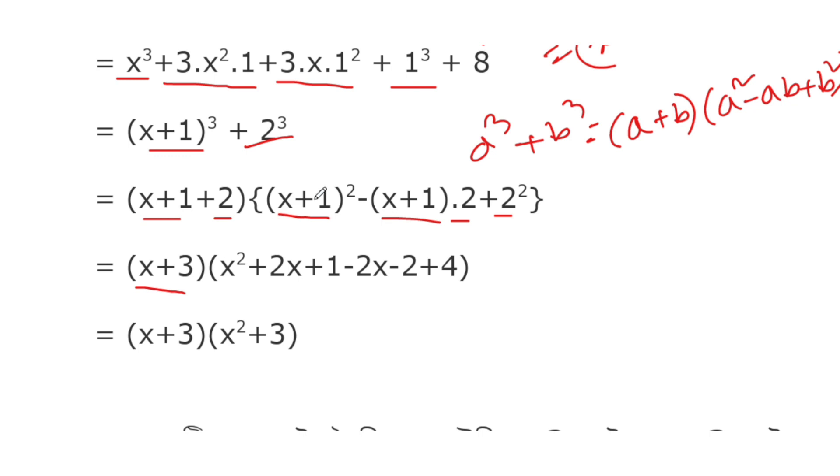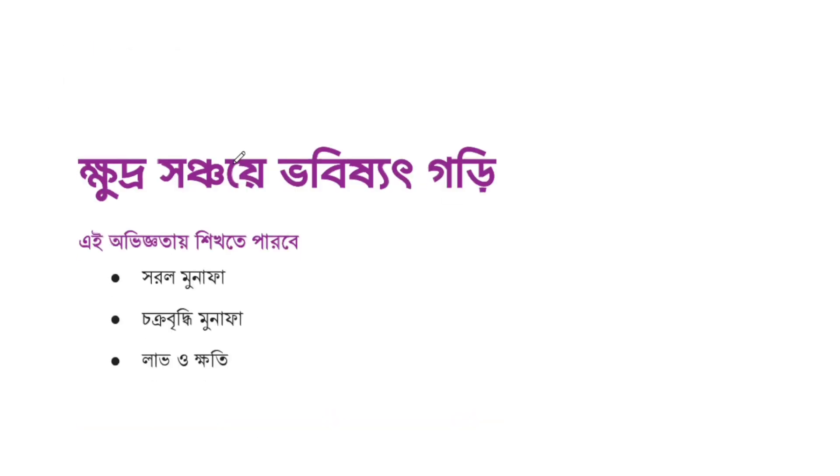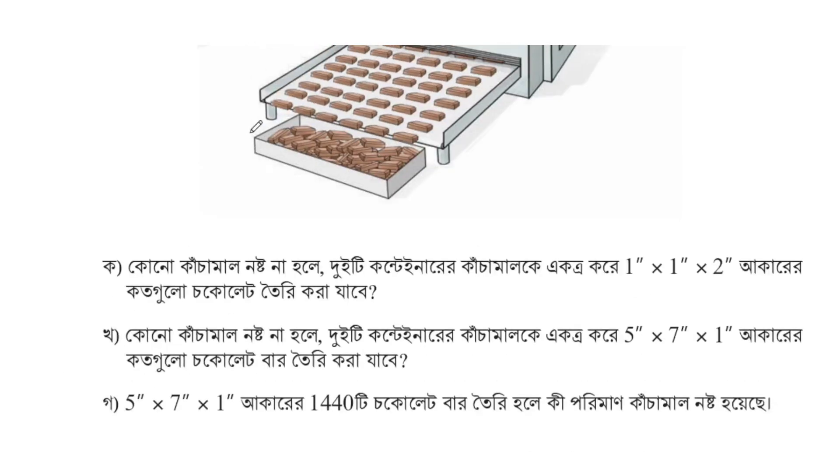Simplifying the second factor: x²+2x+1-2x-2+4 equals (x+3)(x²+3). This is the final answer. I hope you understand these factorization techniques.